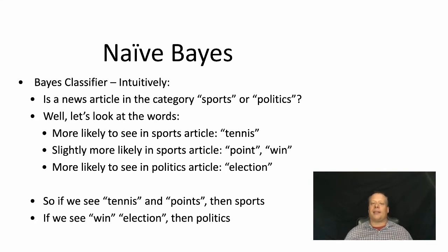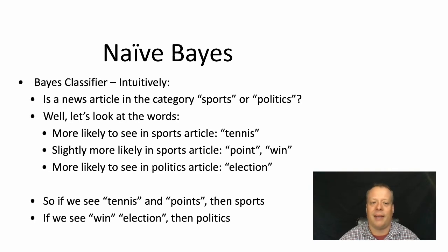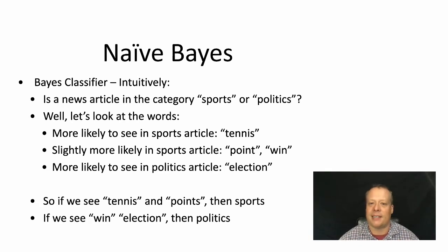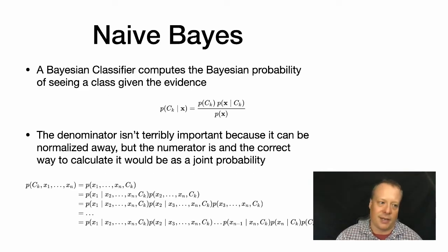In a news article we want to decide if the category is sports or politics. We could look at the words: if we see the word 'tennis' in a news article then it is highly likely to be about sports. If we see 'point' and 'win' it's likely sports, but it might still be about politics — especially the word 'win.' If we see 'election,' it's probably about politics. So if we see 'tennis' and 'points' it's going to be sports; 'win' and 'election' means politics.